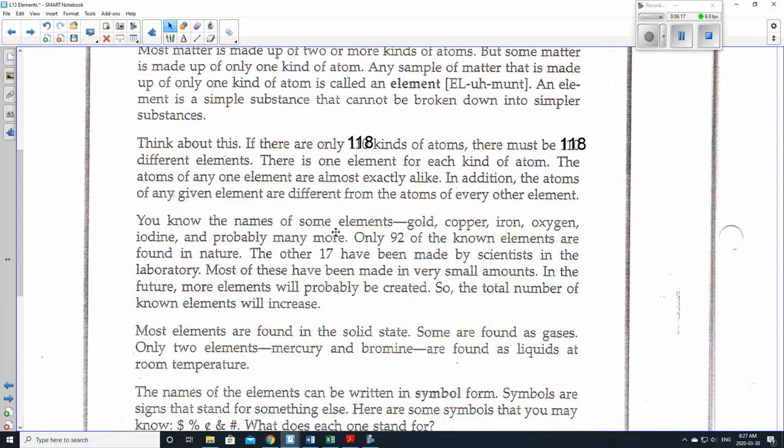You know the names of some elements. Gold, copper, iron, oxygen, iodine, and probably many more. Only 92 of the known elements are found in nature. So when I do 92 and I add 26, that makes up 118. So actually, there are 26 elements that have been made by scientists in the laboratory. Please change that number as well.